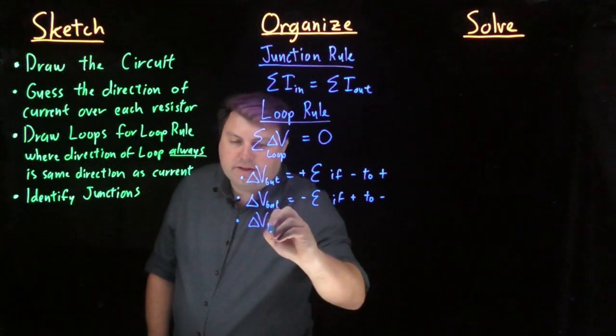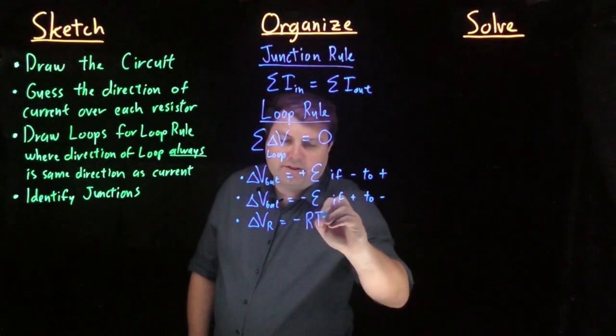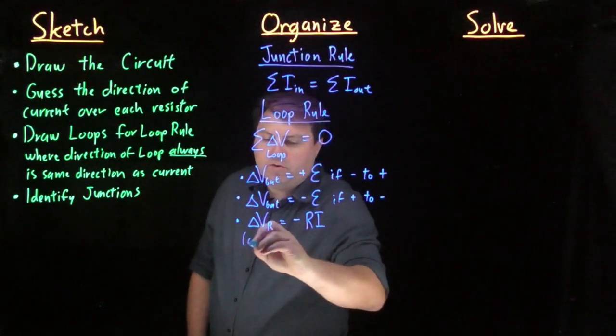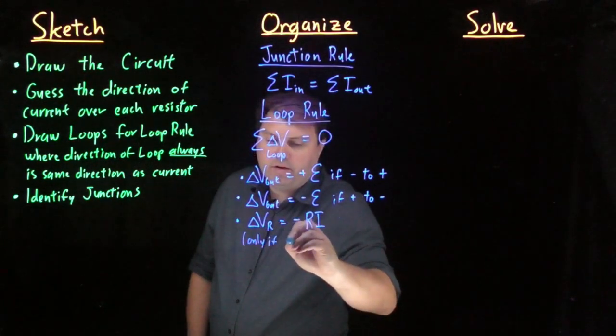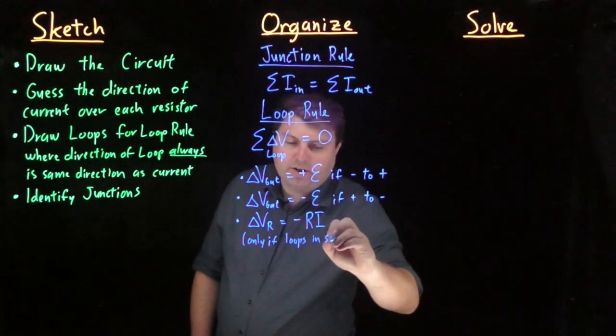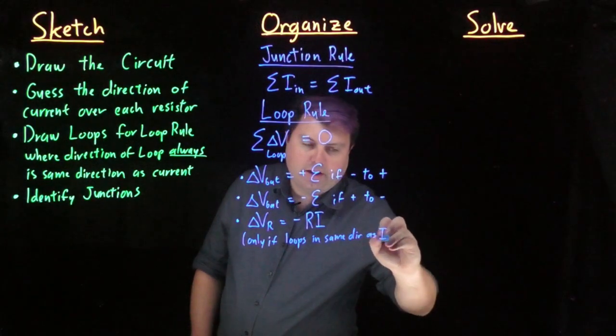And the delta V of each resistor is equal to negative the resistance times the current. But this is only if our loops are in the same direction as the current.